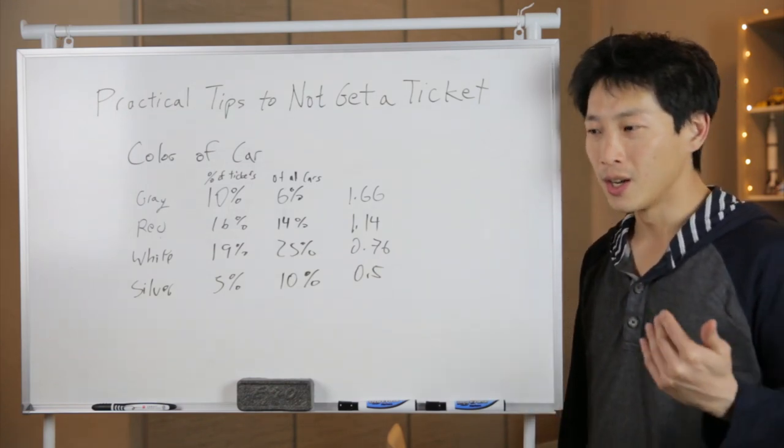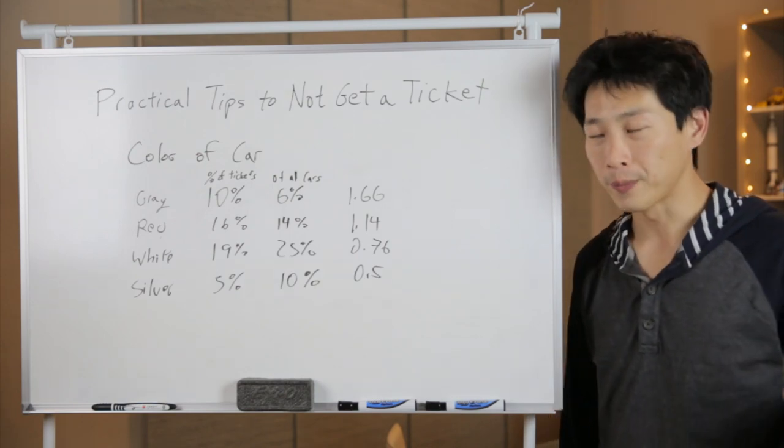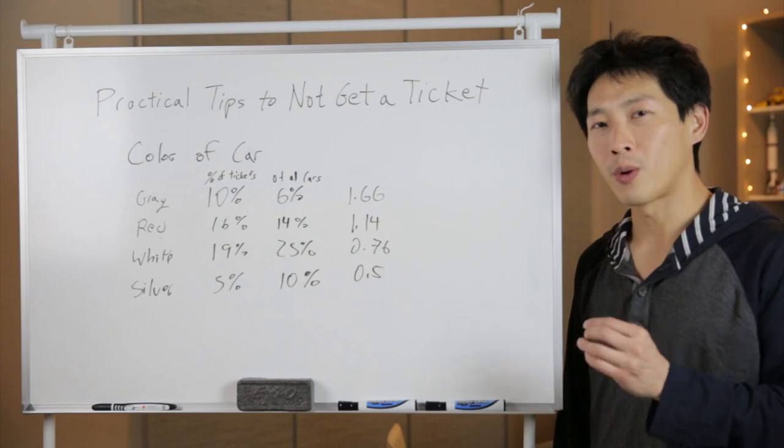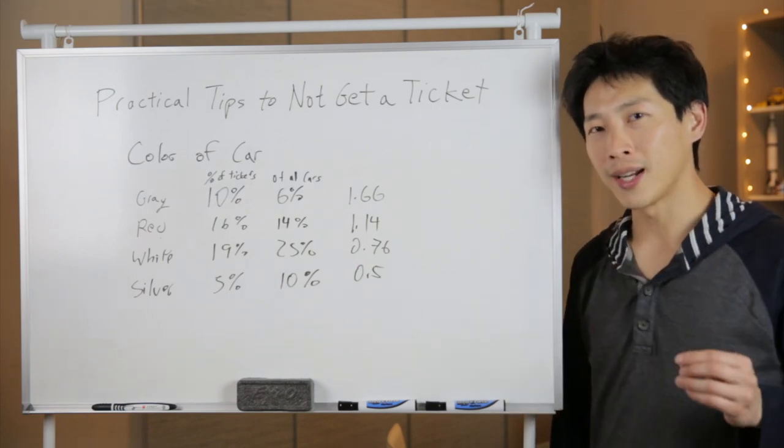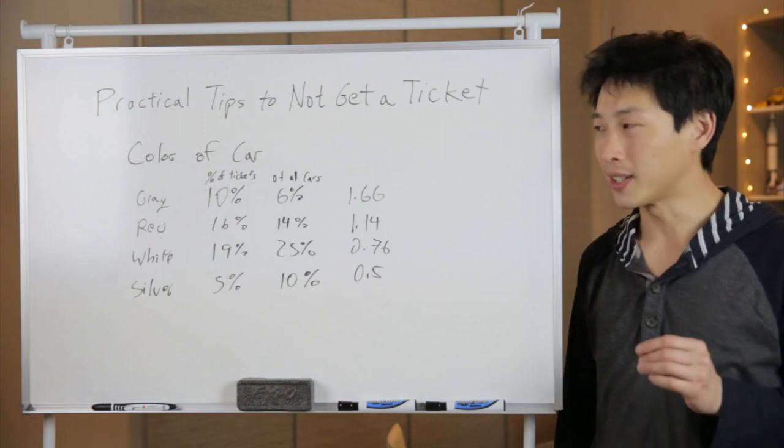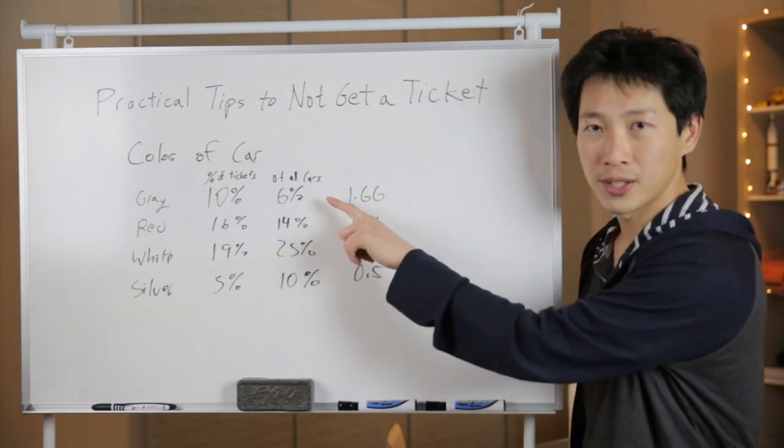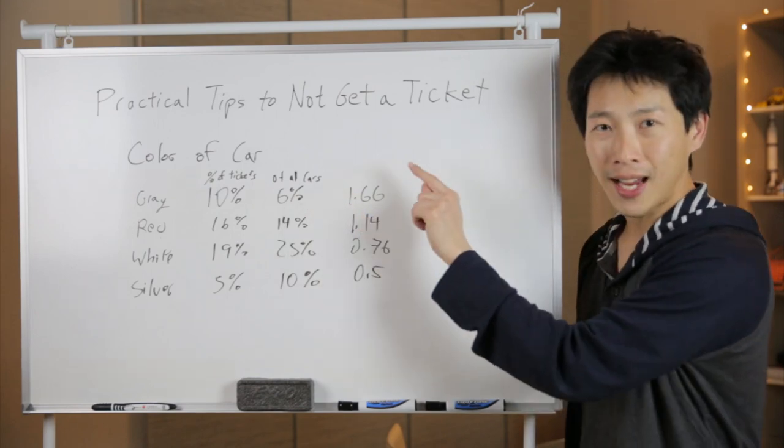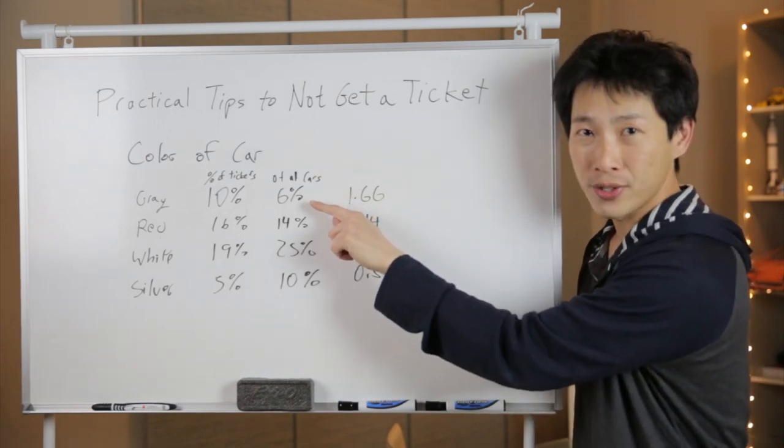You can imagine if you have a lot of cars that are a certain color, of course, it's going to get ticketed more. The trick here is to figure out if that car gets ticketed more often than a random ticketed car. If every single car gets ticketed evenly, then here is the percentage of all cars that are that color.